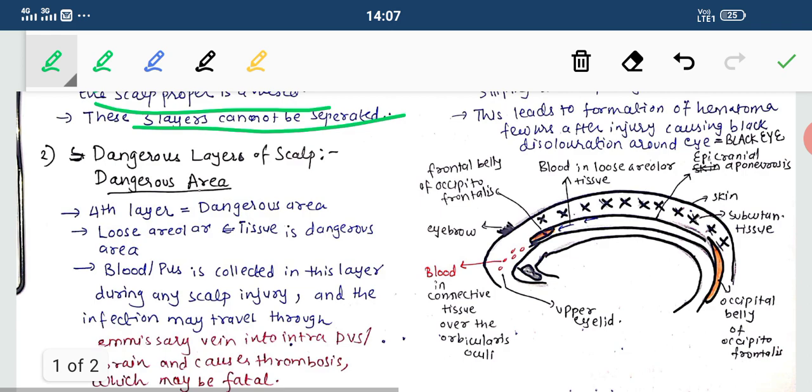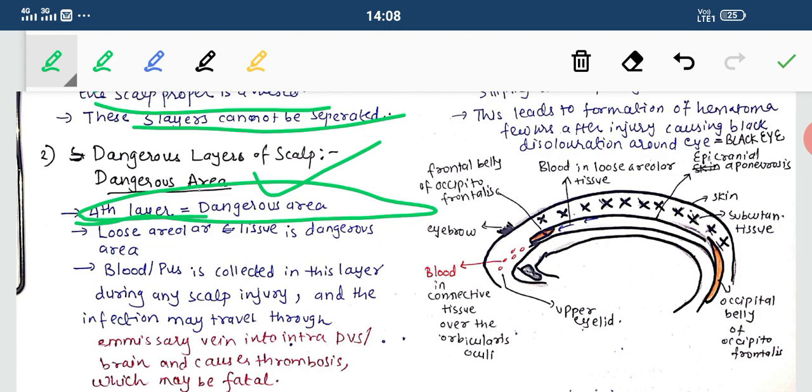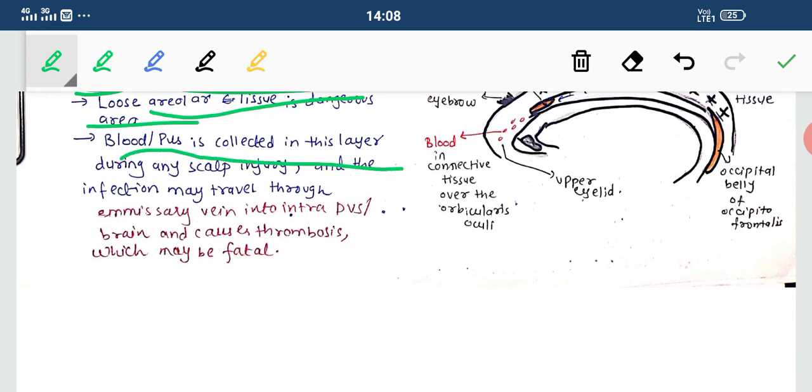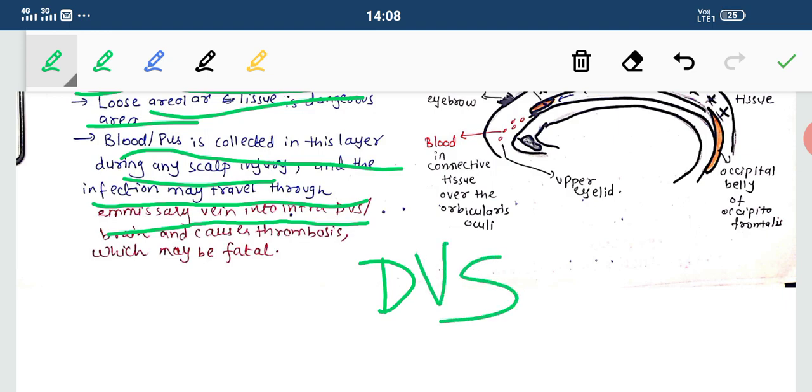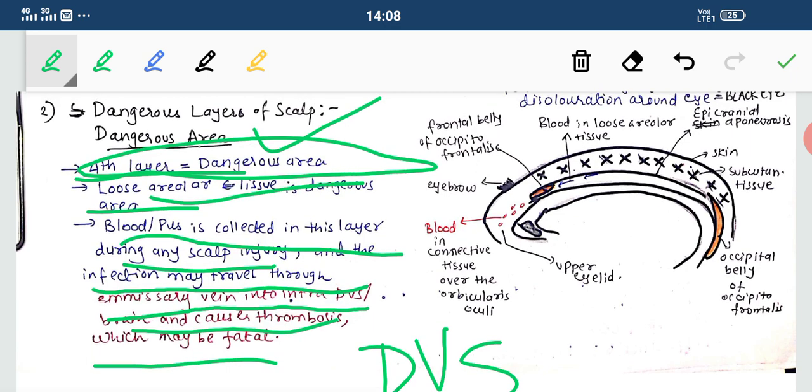Now the dangerous layer or dangerous area of the scalp, that is the second clinical. The fourth layer of the scalp is called the dangerous area of the scalp. The loose irregular connective tissue is the dangerous area. Here, blood or pus is collected during scalp injury, and infection may travel through the emissary vein into the intradural venous sinus or brain, causing thrombosis which may be fatal.